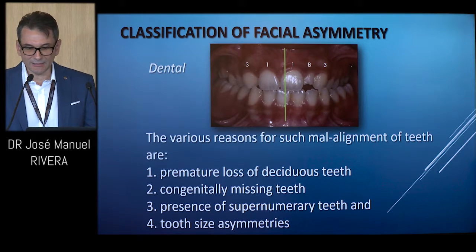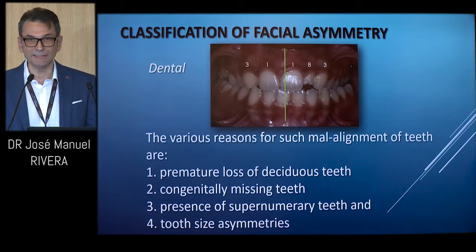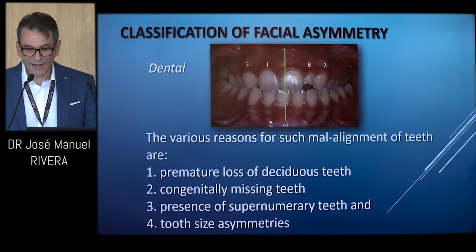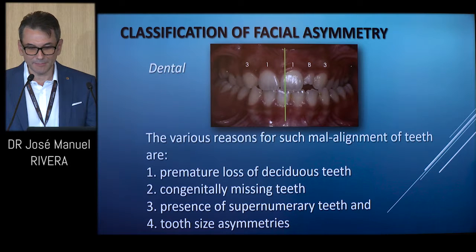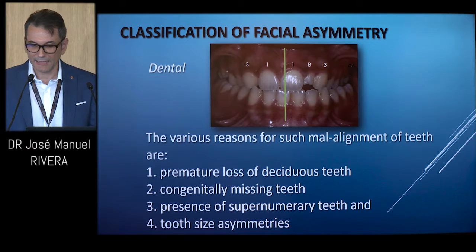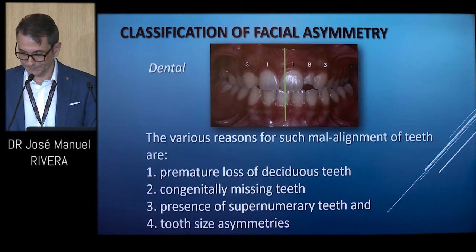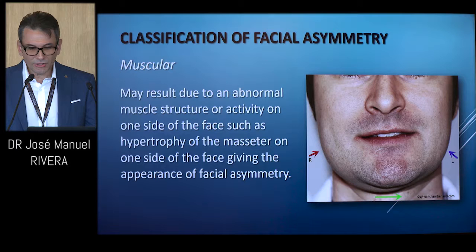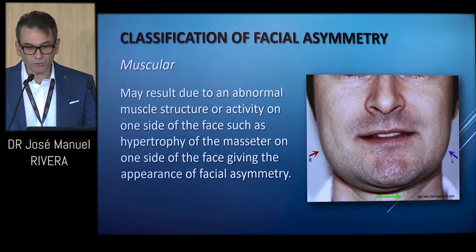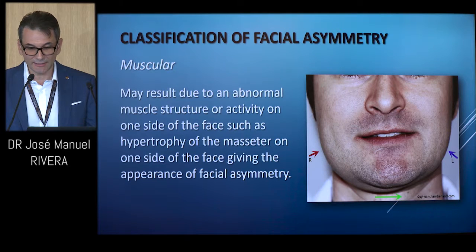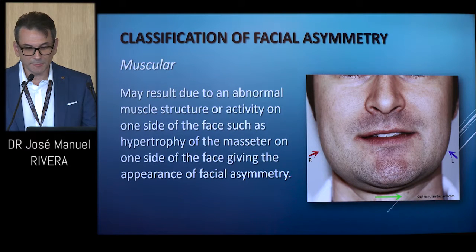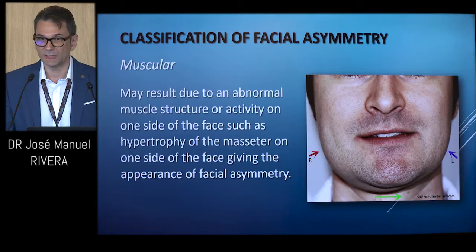Dental asymmetry is associated with disproportions in the distribution of teeth along the arch. The various reasons include premature loss of deciduous teeth, congenitally missing teeth, presence of supernumerary teeth, and tooth size discrepancies. Muscular asymmetry may result due to abnormal muscle structure or activity on one side, such as hypertrophy of the masseter on one side, giving the appearance of facial asymmetry.